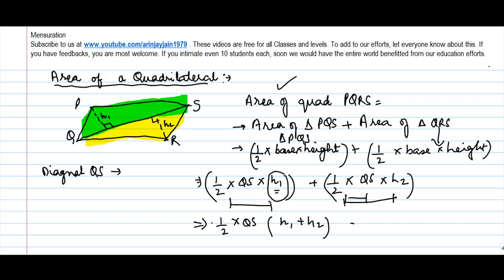So, this gives us the area of a quadrilateral. Area of a quadrilateral is equal to half QS, or you can write this as 1 upon 2 into D, where D stands for the diagonal, into H1 plus H2. Where H1 and H2 are the heights of the two triangles which are formed by drawing a diagonal.